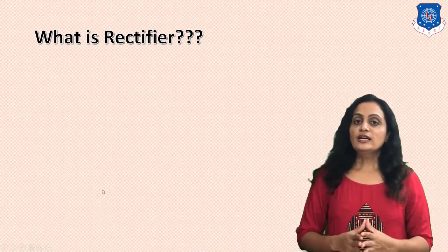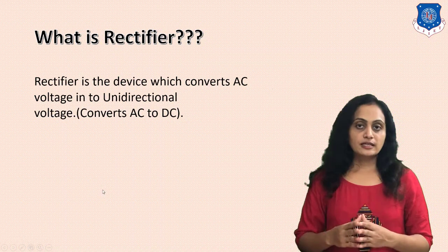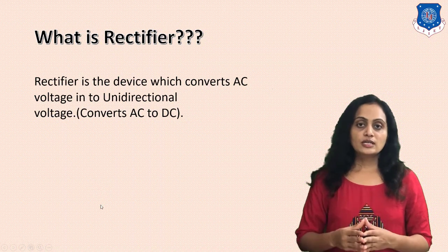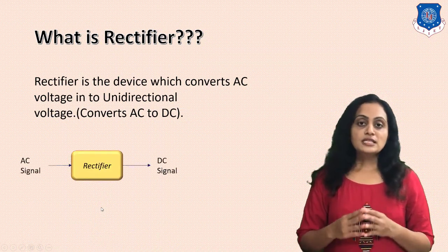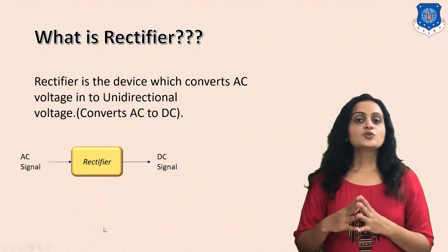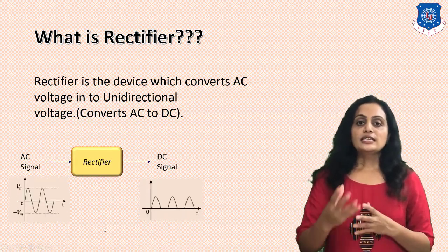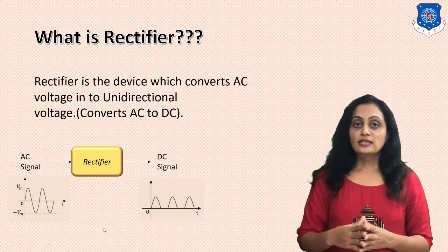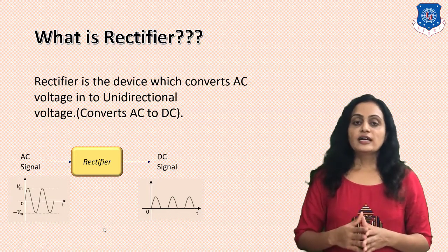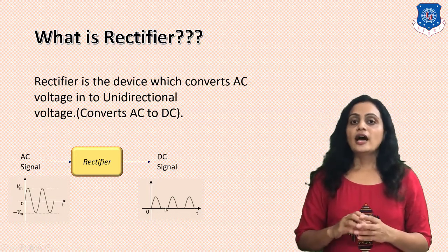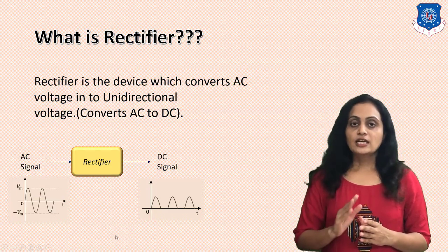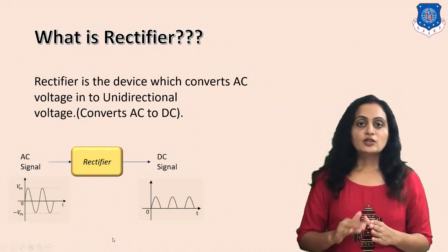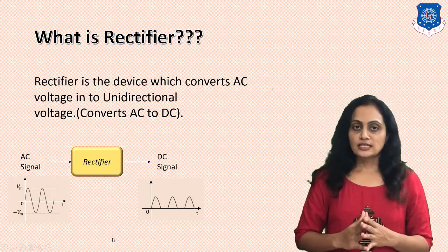Let us begin with what is a rectifier. A rectifier is the electronic circuit which converts the alternating signal into the unidirectional signal — that means it converts AC to DC. The input to the rectifier is the alternating signal and the output of the rectifier is a pulsating DC. It is not providing a constant value of DC; it is a pulsating DC.